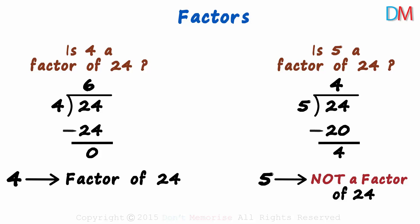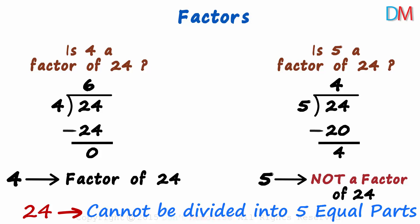How else can we understand this? The fact that 4 is a factor of 24 tells us that 24 can be divided into 4 equal parts. And the fact that 5 is not a factor of 24 tells us that 24 cannot be divided into 5 equal parts.